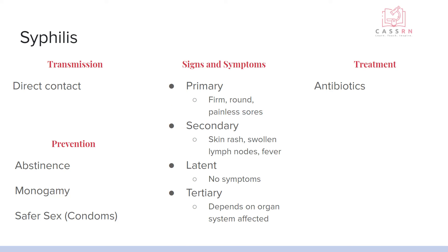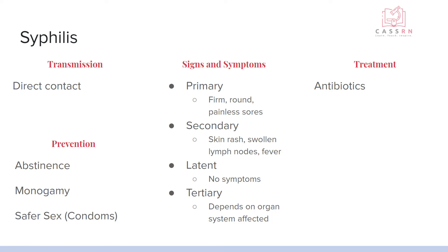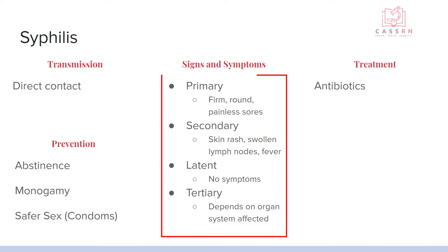Syphilis is a really interesting bacteria — it's shaped like a corkscrew. While it is initially introduced into the reproductive systems, it can actually affect other body systems because it can corkscrew through tissue. This one is direct contact with the same type of prevention as the other STIs. The primary phase is just firm, painless sores. The secondary phase is a skin rash, swollen lymph nodes, maybe fever, and then it goes latent with no symptoms. If it doesn't get treated with antibiotics, it will go latent and symptom-free — but at that point it's traveling from one body system to another.